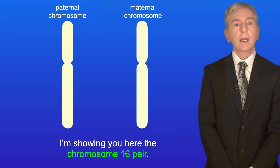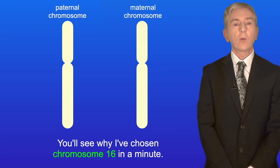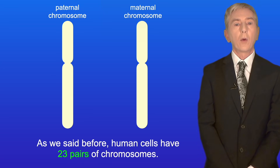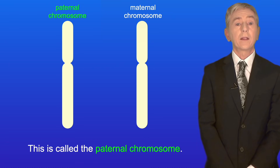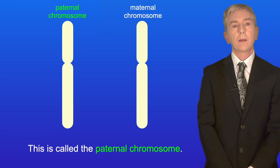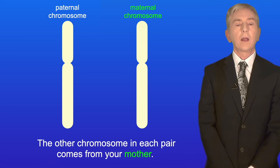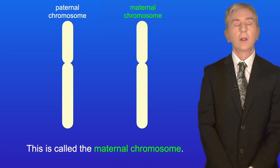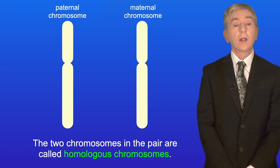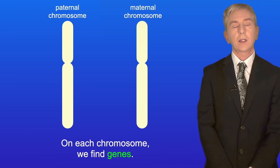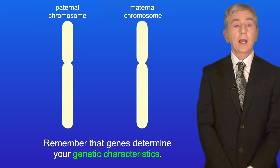I'm showing you here the chromosome 16 pair — you'll see why I've chosen chromosome 16 in a minute. Human cells have 23 pairs of chromosomes. One chromosome in each pair comes from your father and is called the paternal chromosome. The other chromosome in each pair comes from your mother and is called the maternal chromosome. The two chromosomes in the pair are called homologous chromosomes. On each chromosome we find genes, and genes determine your genetic characteristics.